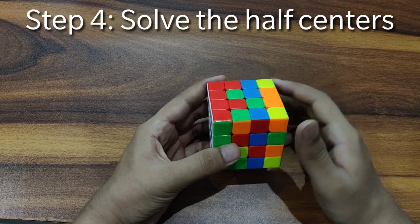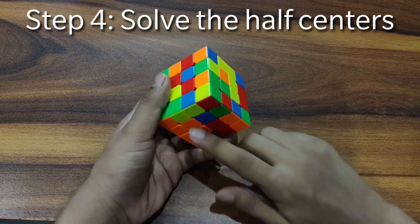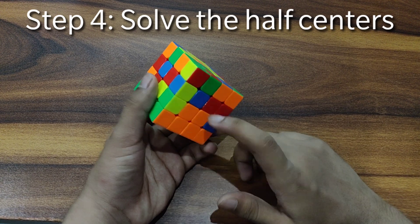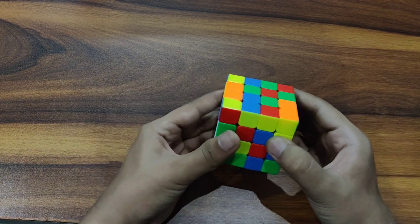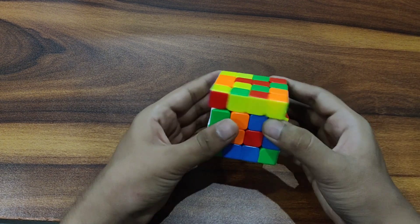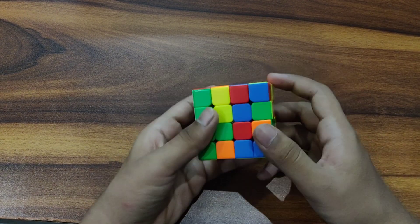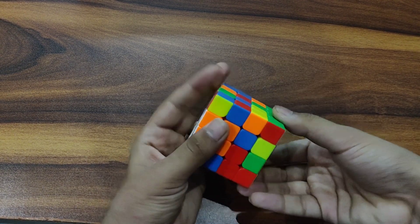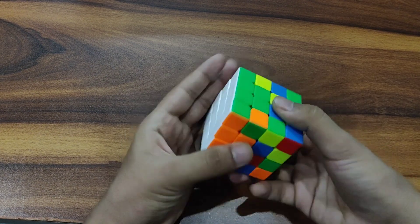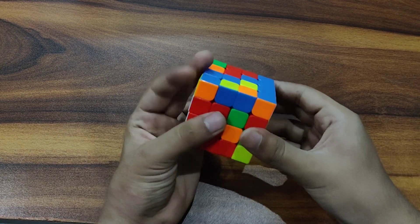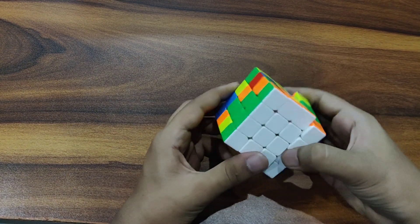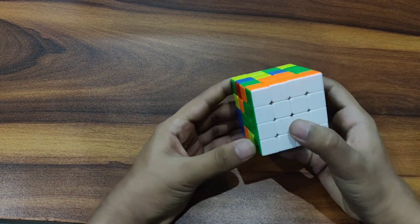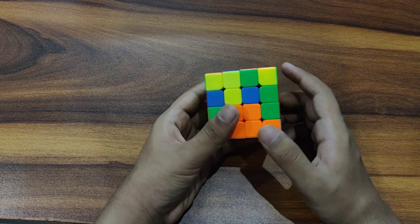Now we have to solve the half centers. So like just how I did this center we can solve the rest as well. So I will move it away down and I will pair it up using this and insert it. So now I will do the same with green, like this. And now I can do the same with blue. Here I solve all the cross edges, the half centers.